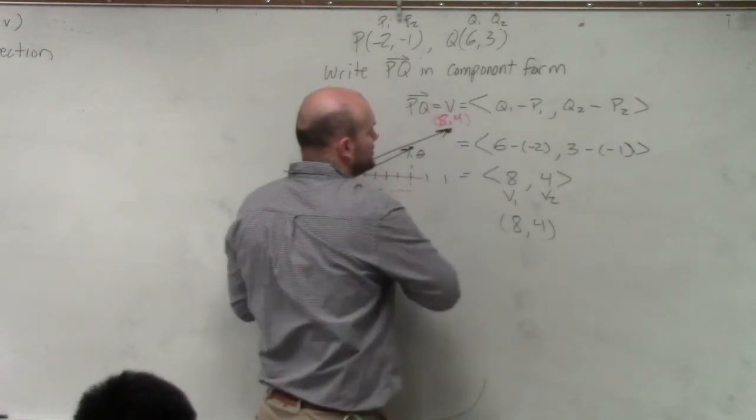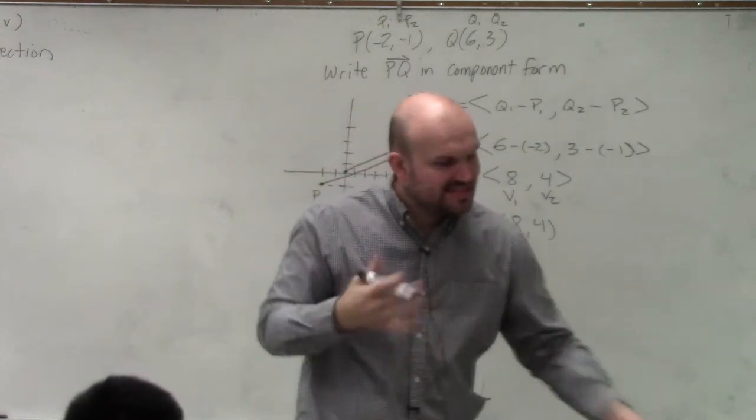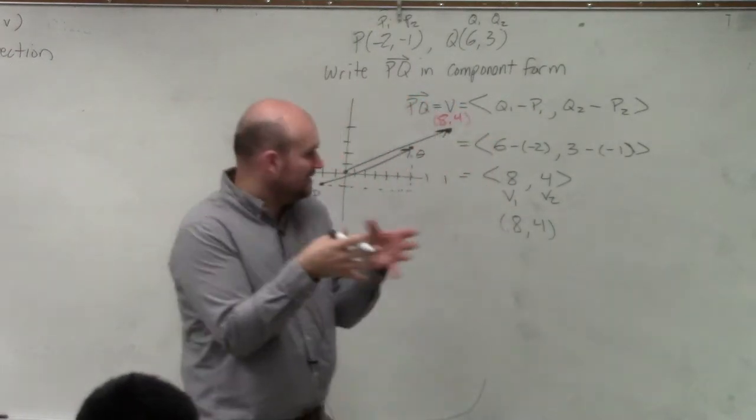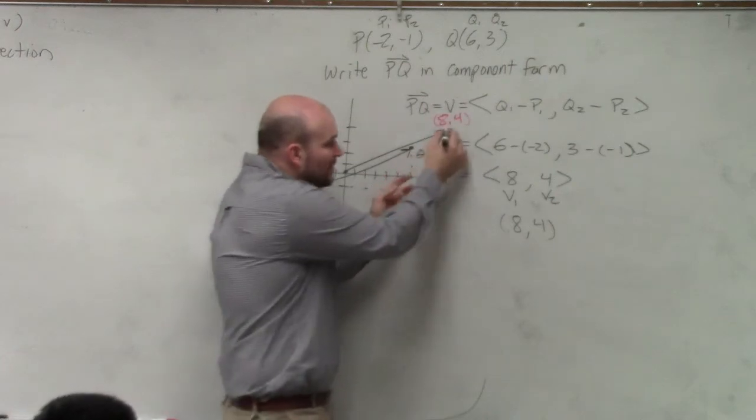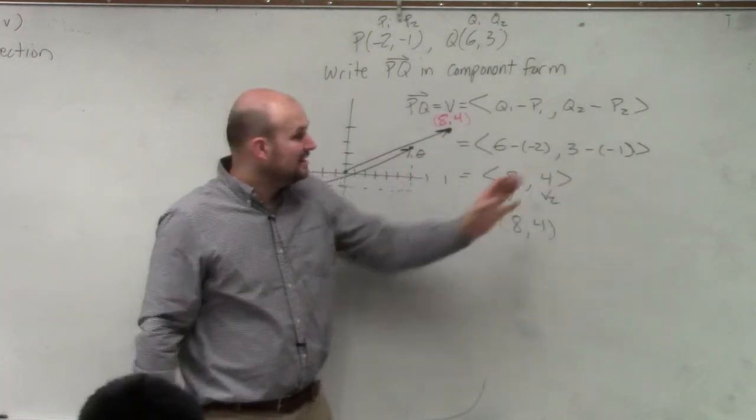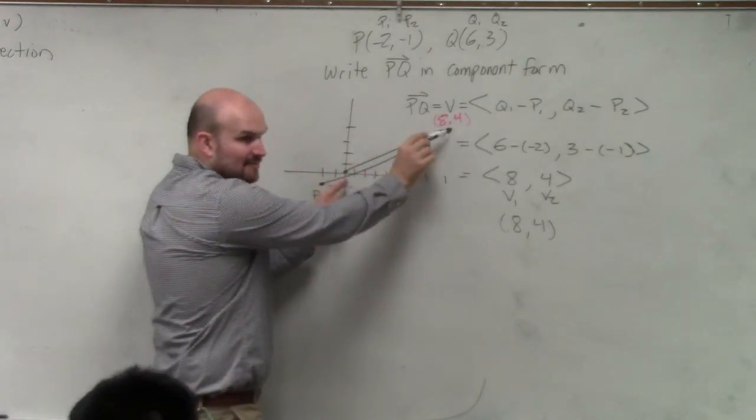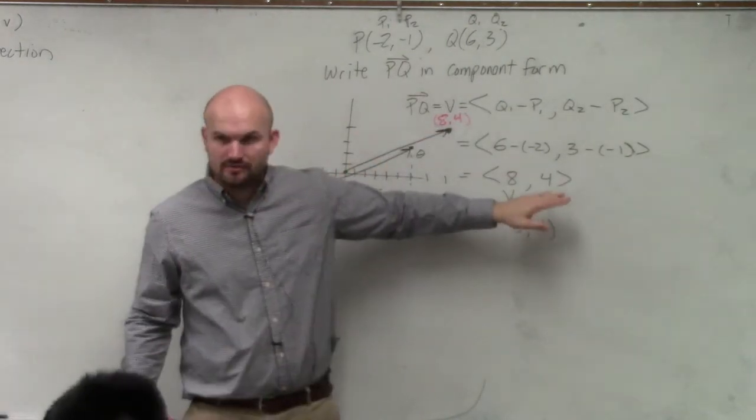8 comma 4, which is right there. So the difference: parentheses 8 comma 4 gives you a coordinate point. Slanted parentheses 8 comma 4 gives you a directed line segment from 0 to 8 comma 4, which is what we call our vector.